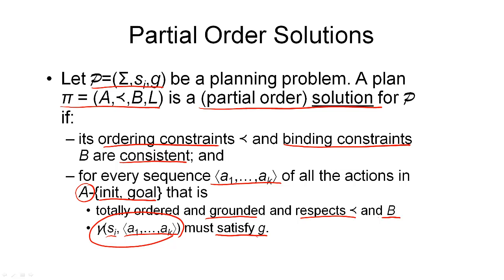There are a few things to note here. First, causal links apparently don't play a role in the formal definition of a solution plan. Second, if we have to test every total order sequence and there is an exponential number of such sequences, this is not a very practical computational procedure for a goal test. However, in constructing our plan, if every precondition of every action is supported by a causal link, then we know our plan will satisfy the goal, since the goal is the final step. That condition — every precondition supported by a causal link — is not quite strong enough as a goal test yet, but we will get there soon.